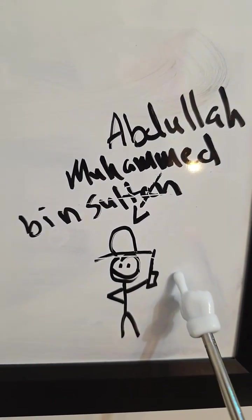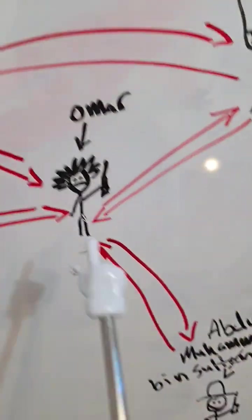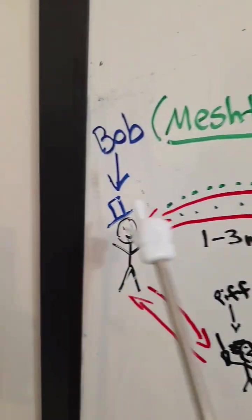This is Abdullah Muhammad bin Sultan. And the only person he's connected to is Omar. And if Abdullah Muhammad bin Sultan wants to get to Bob, it'll ping off of Omar, then Jasper, then Bob.